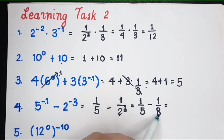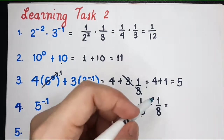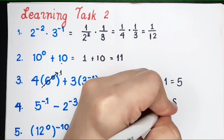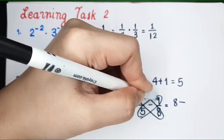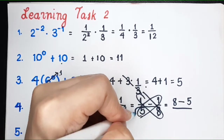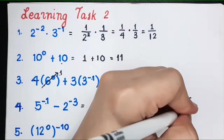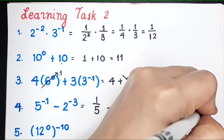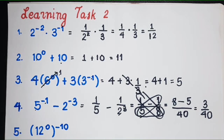Since the denominators have no common factor, we can use the butterfly method. Multiply: 8 times 1 gives 8, minus 5 times 1 gives 5, over 8 times 5 which gives 40. Subtracting gives 3, and copying the denominator, the answer is 3 over 40.